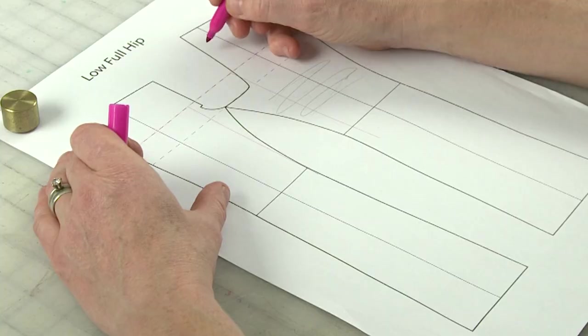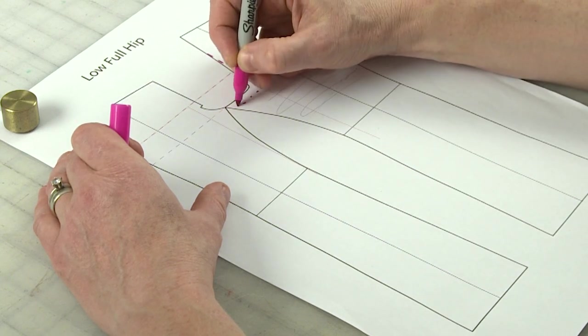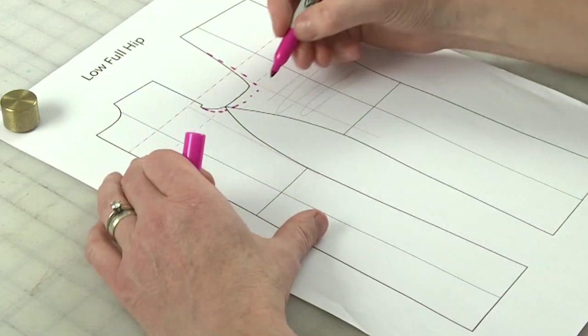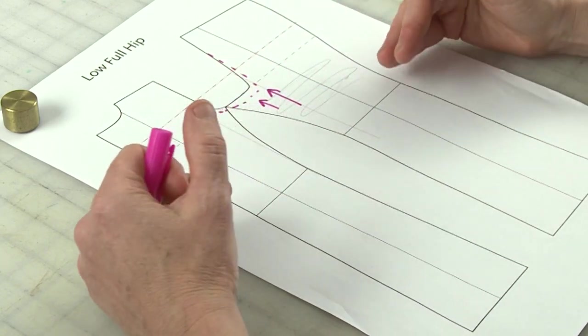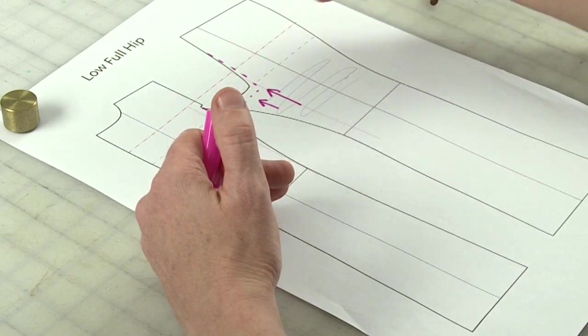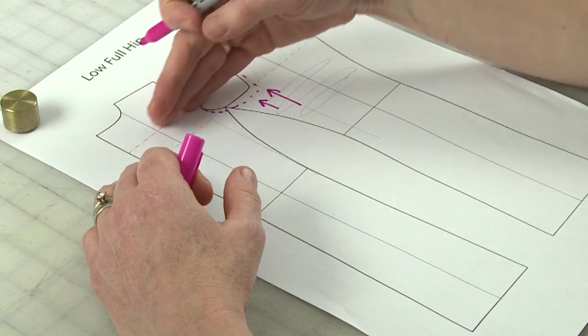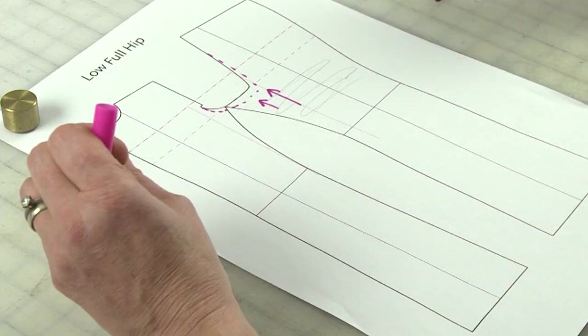What happens is you make your fit muslin and you end up with fabric that's sort of loose on the back leg. So one of the common ways to fix that is to scoop the back crotch. So it could be an adjustment that looks something like this. Let's say we scoop and maybe we have to come up here a little bit.